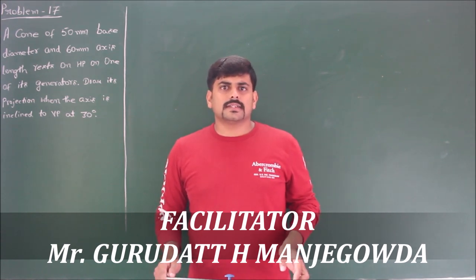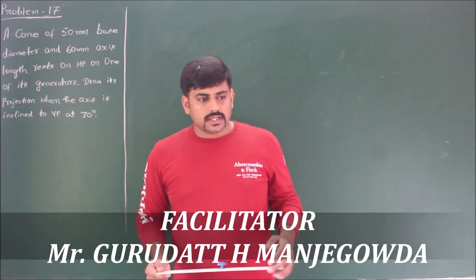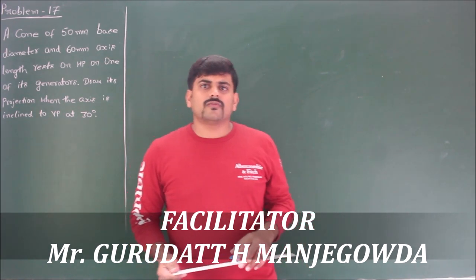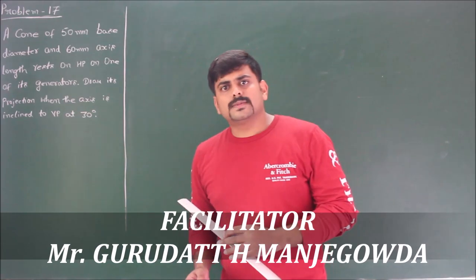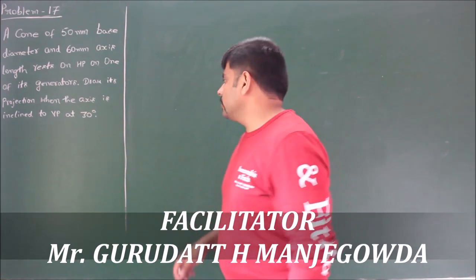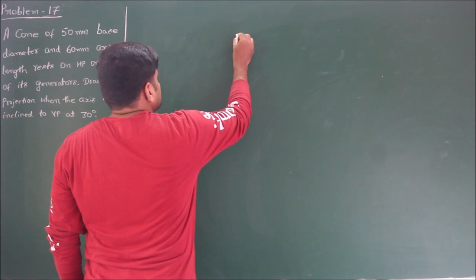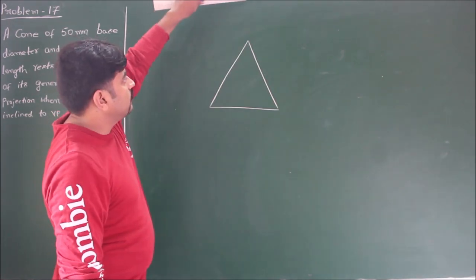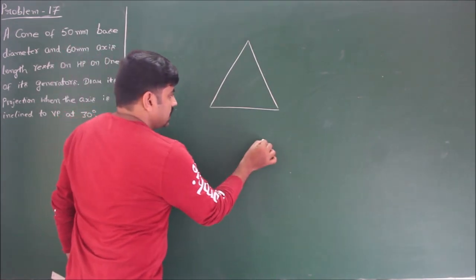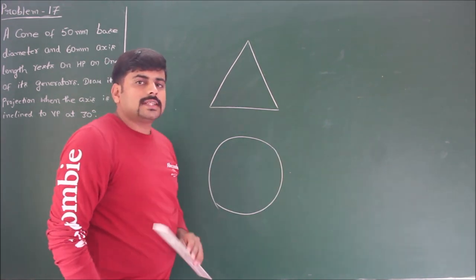In analyzing the projection of cones, if you observe the cone in the front view, it looks like a triangle. Whereas if you look at the cone from the top, you will get a circle.